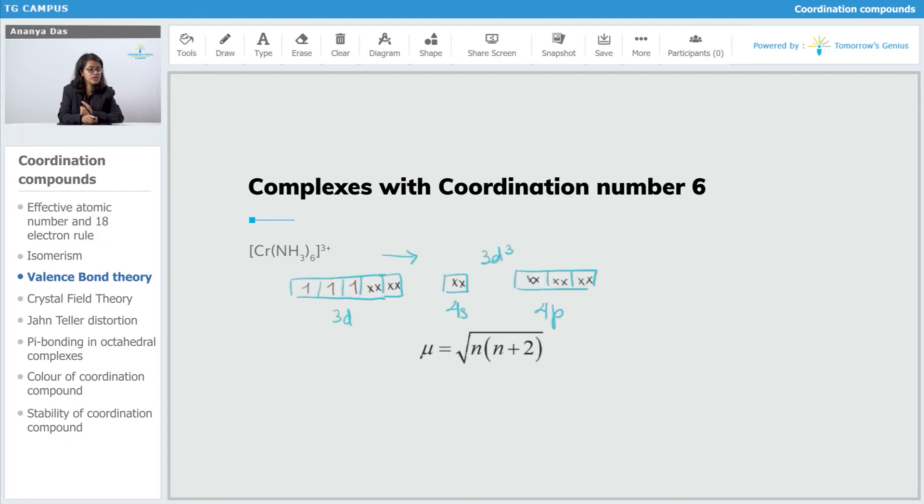There are 3 unpaired electrons in total. Here I can write 3 into 3 plus 2, that's under root 3 into 5, that's under root 15, and under root 15 has the value of 3.87.